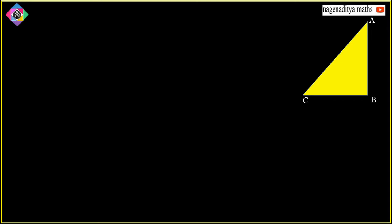To prove this theorem, first we have to draw a diagram. This is triangle ABC, in which the square of one side is equal to the sum of squares of the remaining two sides. Let us consider AC square is equal to AB square plus BC square. This is given in this problem, so we write it under the heading 'Given': in triangle ABC, AC² = AB² + BC².